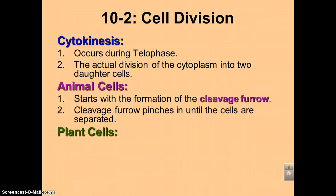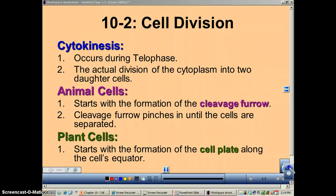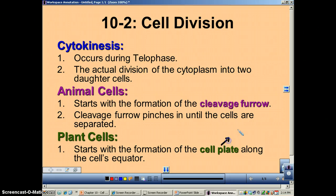In plant cells, we have that cell wall to contend with. When you do cytokinesis in a plant cell, you're essentially just going to make another cell wall, and that begins with a cell plate. This cell plate will be the beginning — the start of a new cell wall.